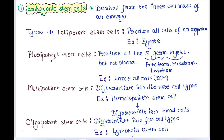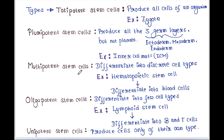Next are pluripotent stem cells. Pluripotent stem cells produce all three germ layers — ectoderm, mesoderm, and endoderm — but not the placenta. An example of pluripotent stem cells is the inner cell mass (ICM). Next are multipotent stem cells, which differentiate into discrete cell types. For example, hematopoietic stem cells are differentiated into different types of blood cells — generally all blood cells are derived from hematopoietic stem cells.